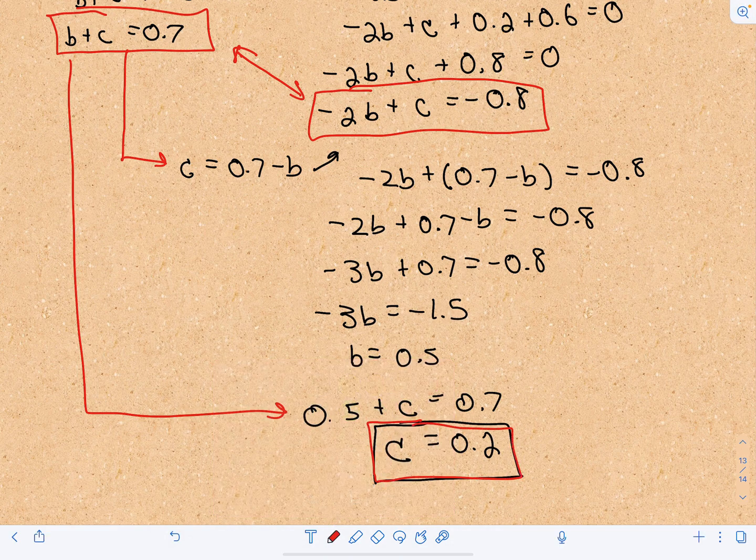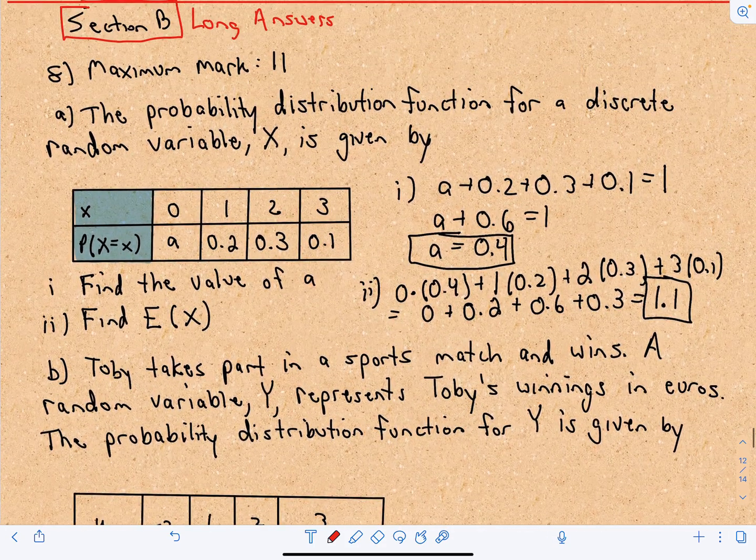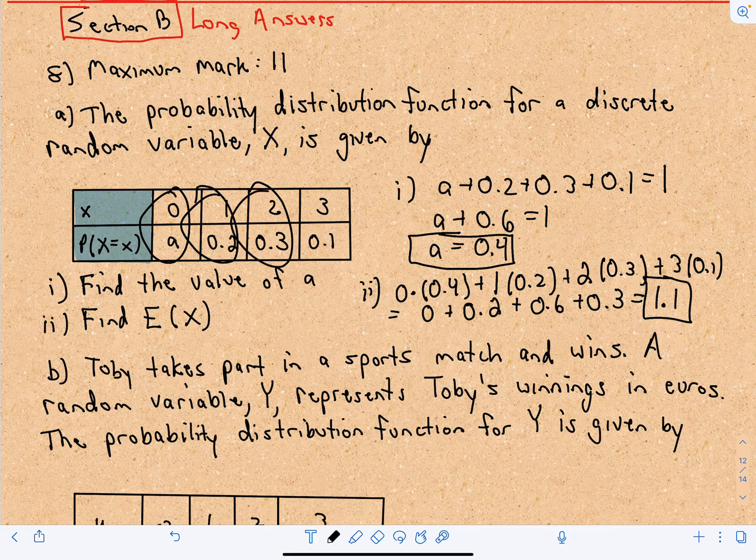So that'll be our solution in this case. So I think the first one isn't too bad. Part 1 shouldn't hopefully be too bad at all. The expected value, again, you're just multiplying and adding those values together.